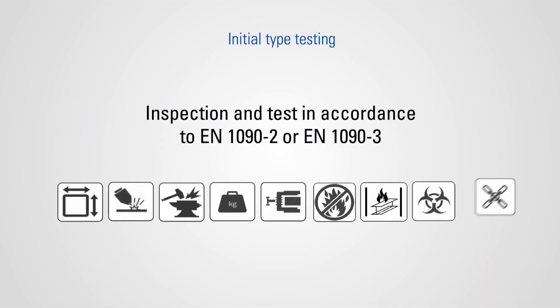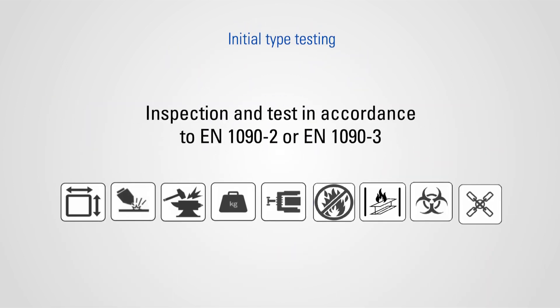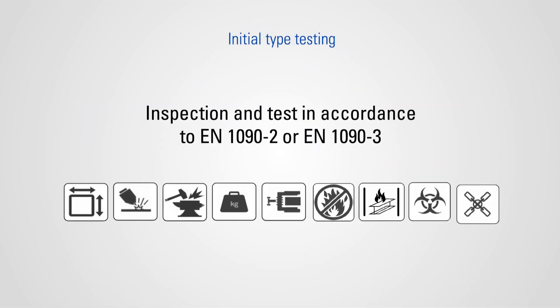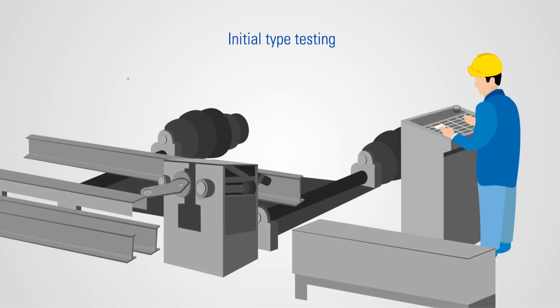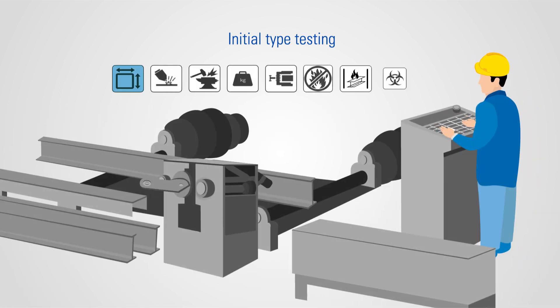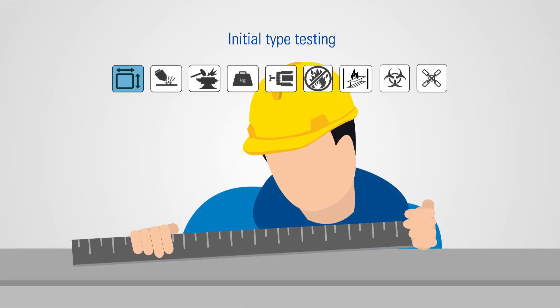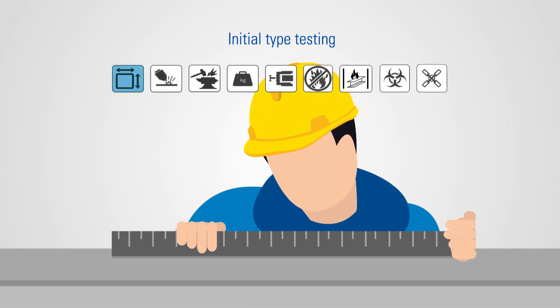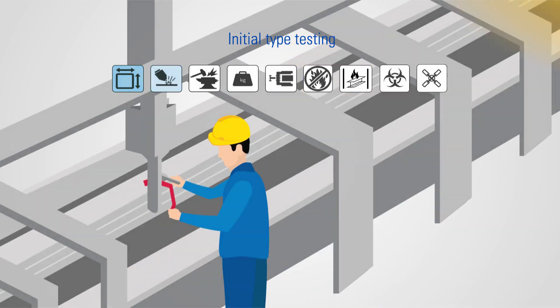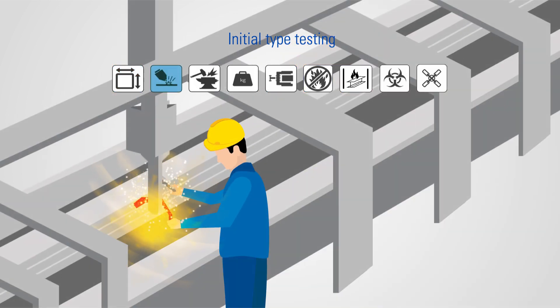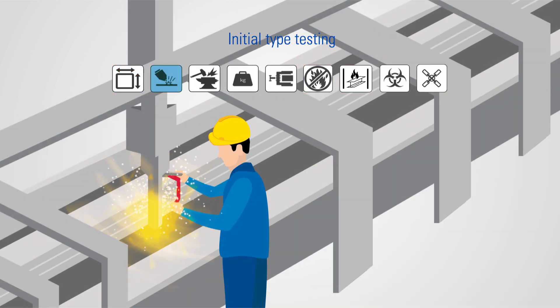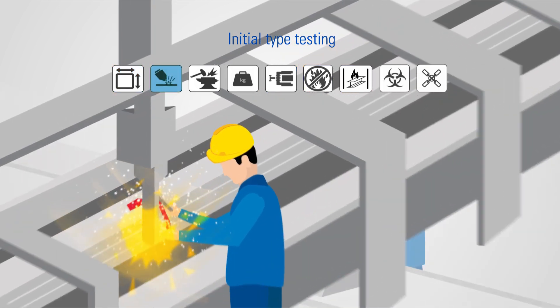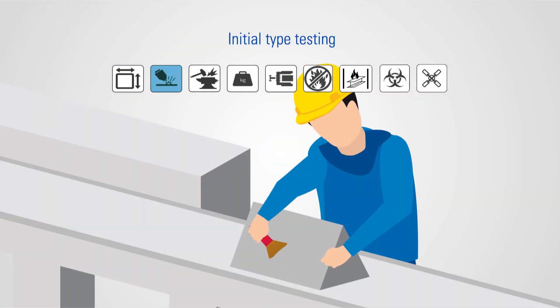Based on the execution class, you would have to conduct initial type testing on your products for characteristics like tolerances on dimension and shape, and weldability, to show that you can produce components that conform to the standards.